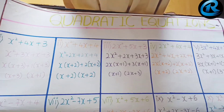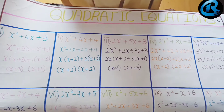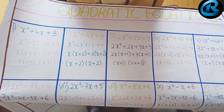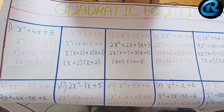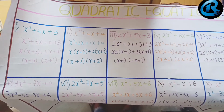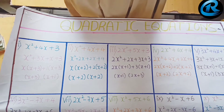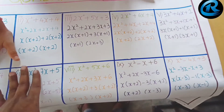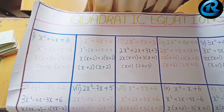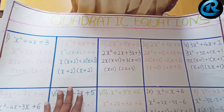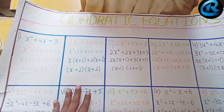A quadratic equation in the variable x is an equation in the form of ax² + bx + c = 0, where a, b, c are real numbers and a is not equal to 0. Any equation of the form p(x) = 0, where p(x) is a polynomial of degree 2, is a quadratic equation.